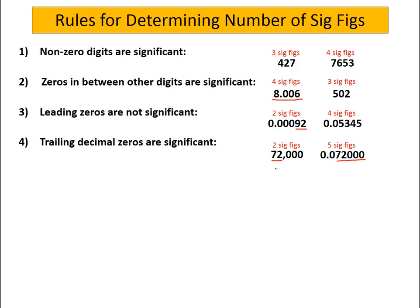One way to get around that is to just write your numbers in scientific notation, and then any trailing zeros will be significant.